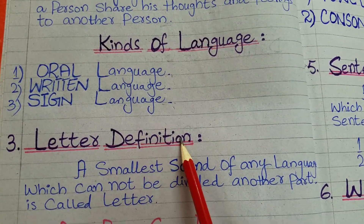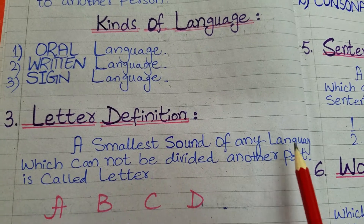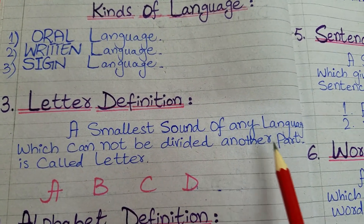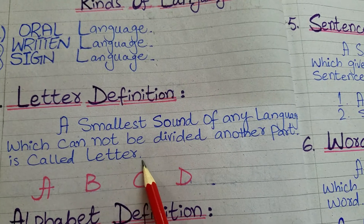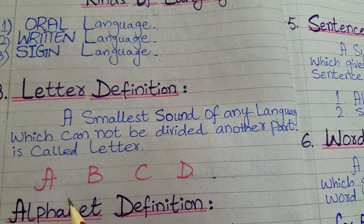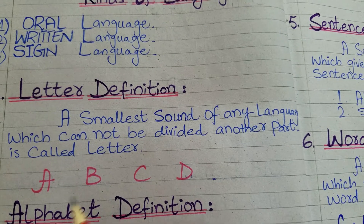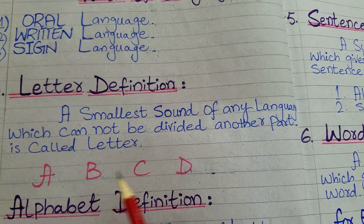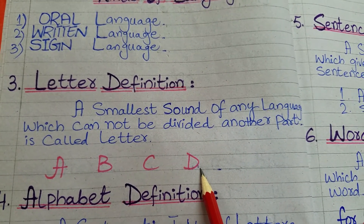Next: letter definition. A smallest sign of any language which cannot be divided into another part is called a letter. For example: A, B, C, D — this is letter A, this is letter B, this is letter C, this is letter D.